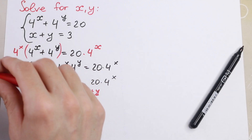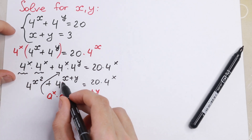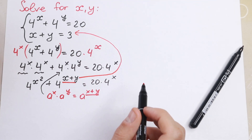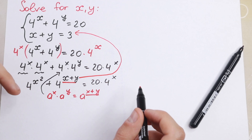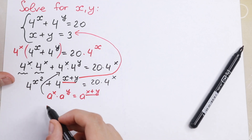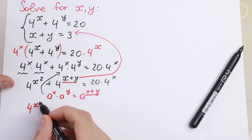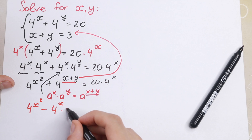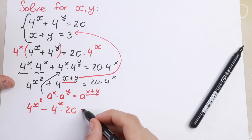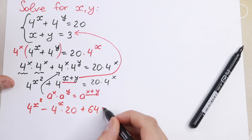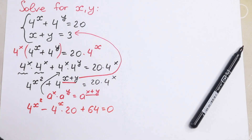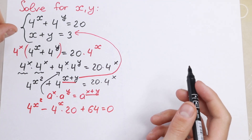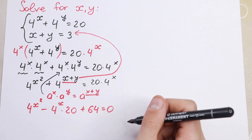We have x plus y in our expression, and from the second equation we know x plus y equals 3, so we can plug that in. Bringing everything to the left gives us 4 to the power x squared minus 20 times 4 to the power x plus 4 cubed — which is 64 — equal to zero.